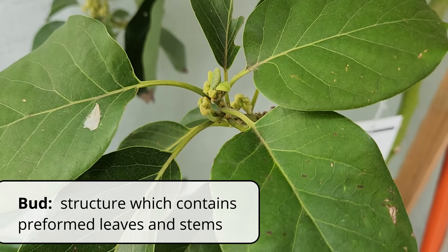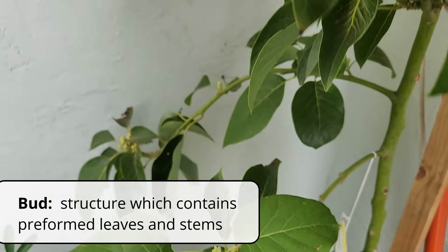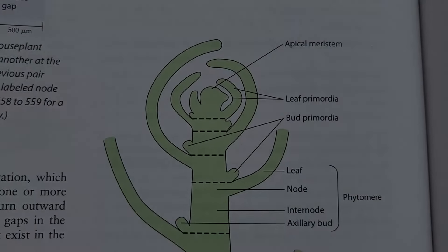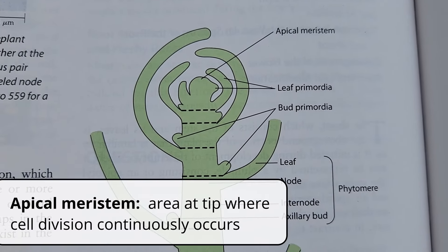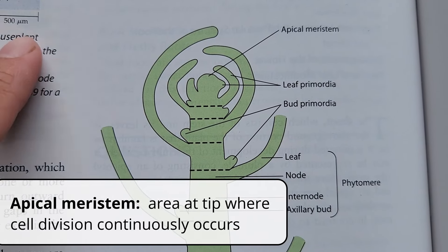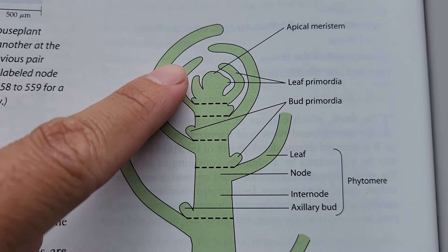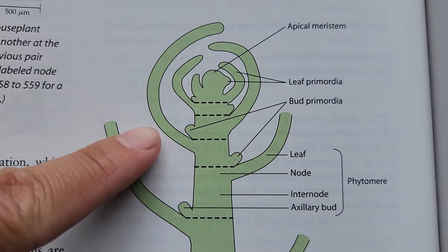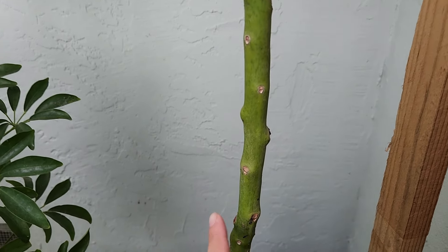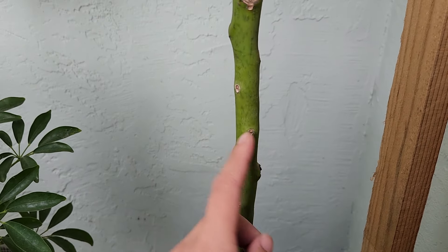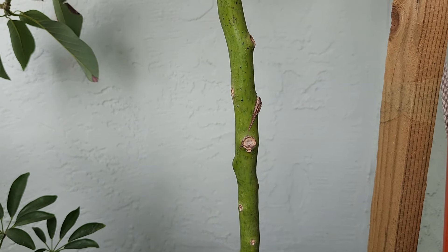A bud is a structure that contains the new leaves and stems for the next growing season. It also contains an apical meristem where new cells are constantly divided and added on to the body of the plant. The baby leaves fold over and protect the meristem from damage. Buds are arranged in a specific pattern around the stem, which is unique to that species.